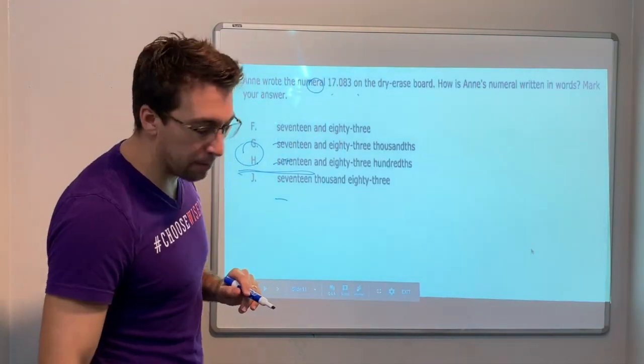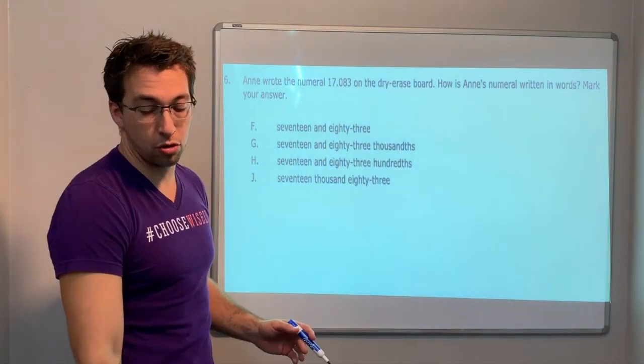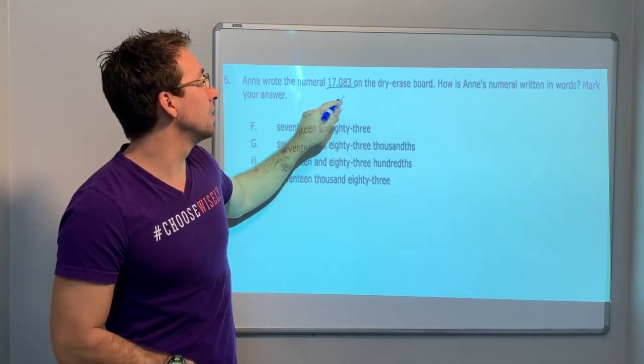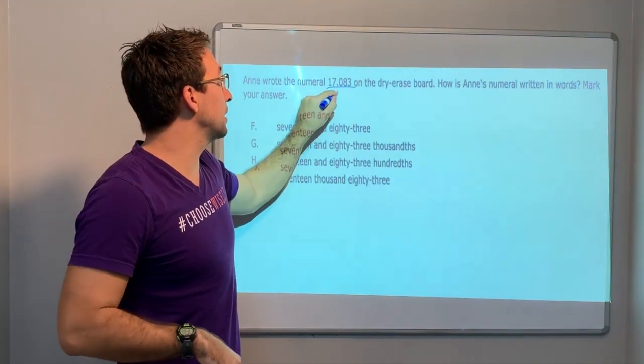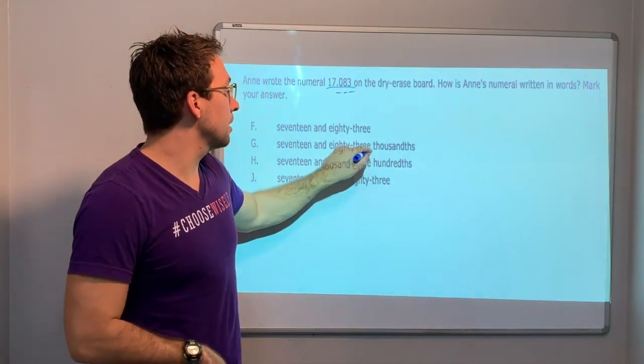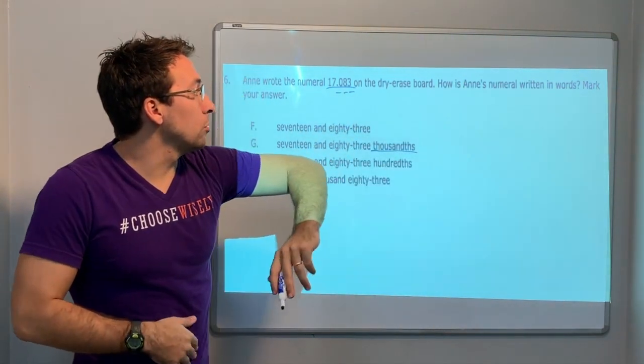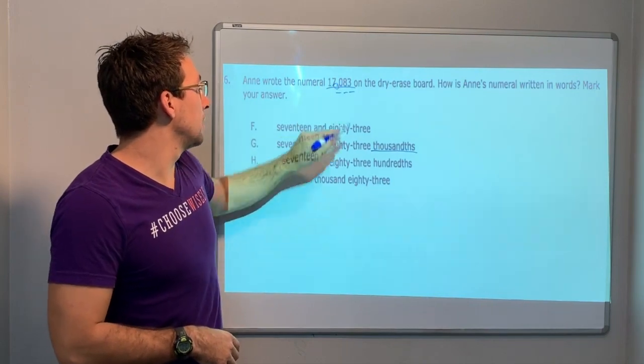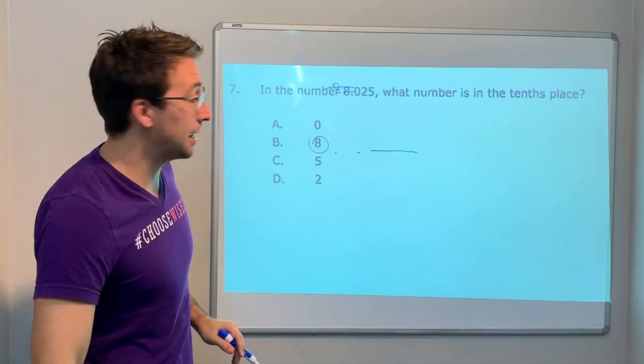You have to be able to, with cheat code 5.2a, know how to use words to describe these numbers. And wrote the numeral 17 and 83. It's just a simple 83, but there's three decimal places. One, two, three. It ends in the third. 83 ends in the third, so it's got to be thousandths. How is And's numeral written in words? 17 and 83 thousandths. It's that simple.